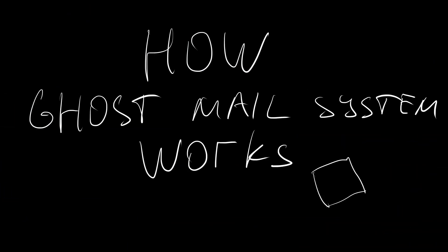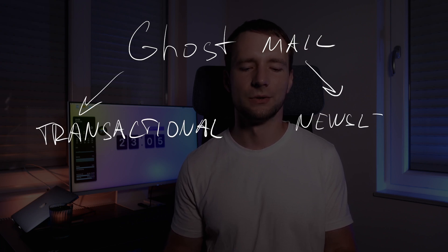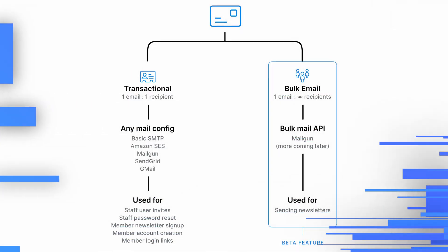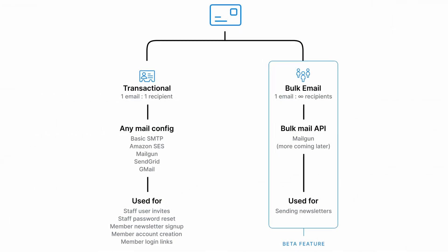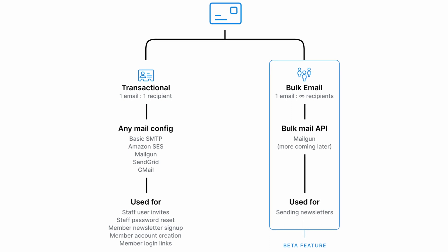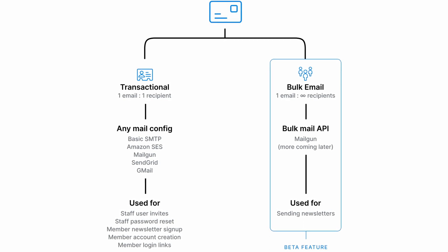How does the Ghost mail system work? Ghost is a bit tricky in terms of mail delivery. There are two types of emails sent by Ghost: transactional and newsletter. The first one is for password resets, member signups, and staff user invites. The second one is used exclusively for sending out newsletters.